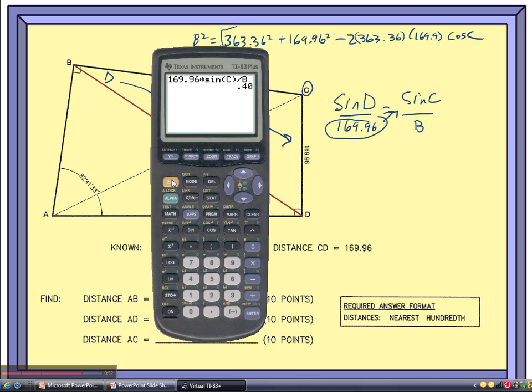It's 0.4 up. That's not what I'm looking for. I'm looking for the inverse sine of that number. And this is the angle measurement. Let's go ahead and store that in the calculator as D.